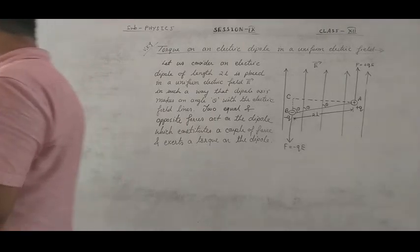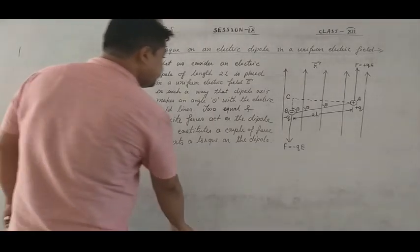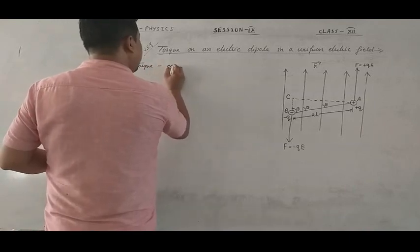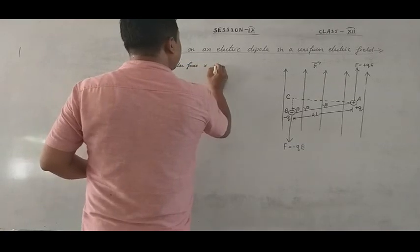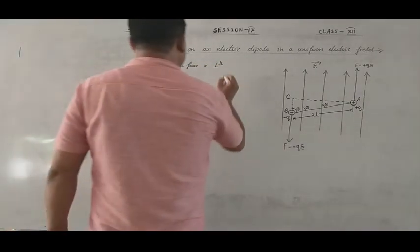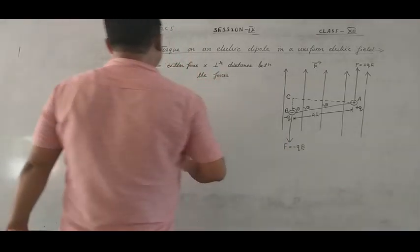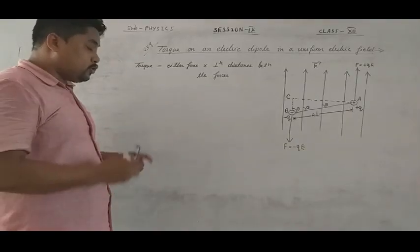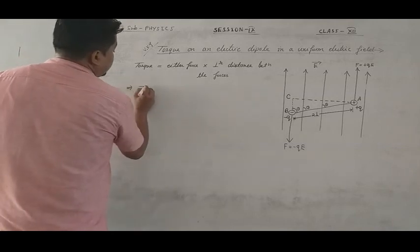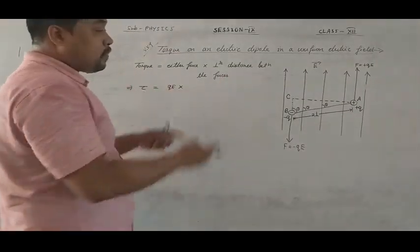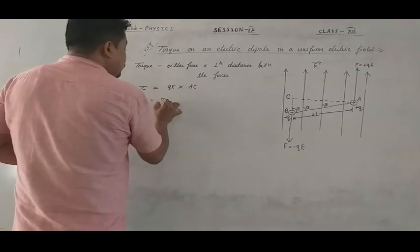According to the definition of torque, torque is equal to either force into perpendicular distance between the forces. The symbol of torque is tau. The magnitude of either force is qE. So tau is equal to qE into AC, where AC is the perpendicular distance from the figure.